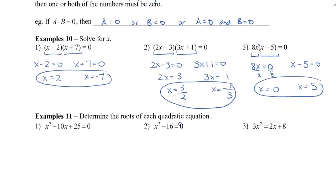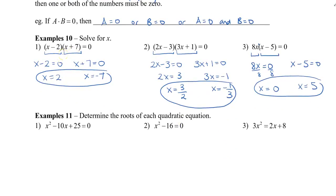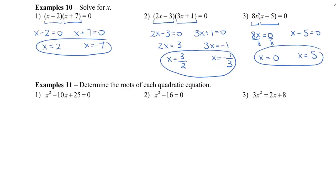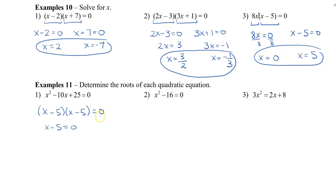Let's take a look at some other examples which aren't already written with the multiplication. We need to determine the roots of these quadratic equations, so we need to create those two factors. This first one has no coefficient in the front, so we want to find two numbers that multiply to 25 and add to negative 10. That gives us x minus 5 and x minus 5 equals zero, so x equals 5.